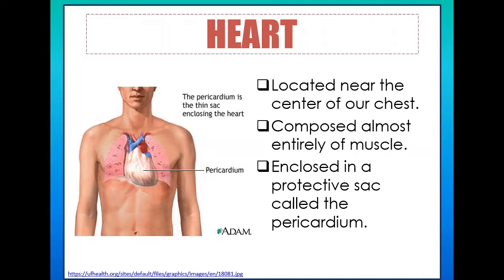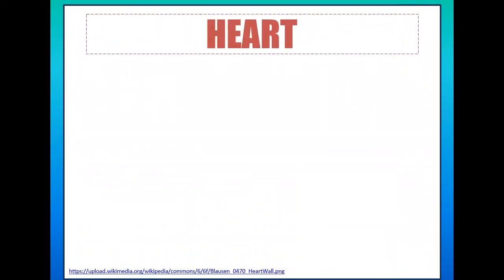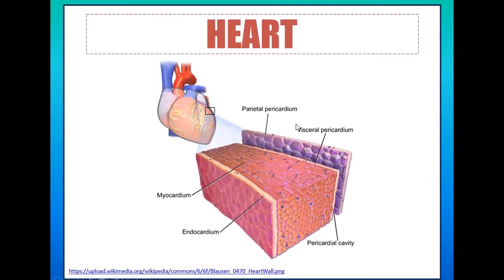That covers the basic information about the heart's location, size, and outer anatomical parts. Now, this organ is entirely composed of muscle, and it begins to contract before you are born and stops only when you die. Let's identify the muscle composition of the heart, which allows it to pump blood throughout the body. Looking at this illustration, the heart's muscle composition is made up of three layers.